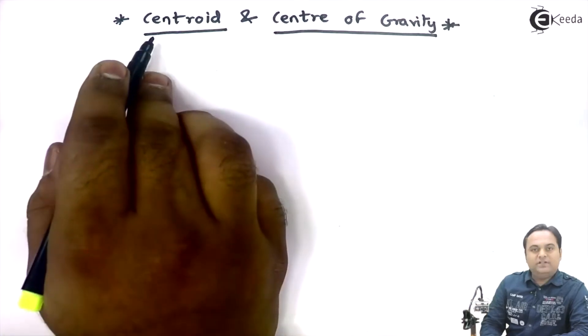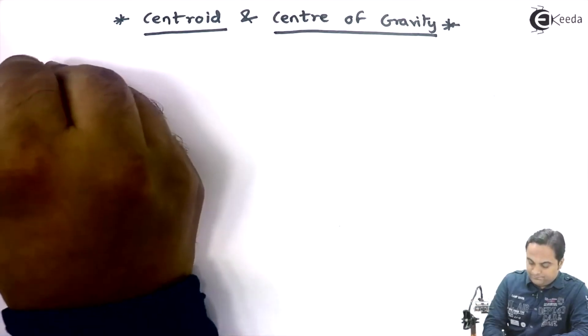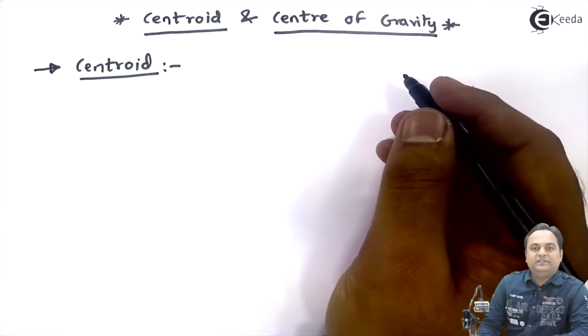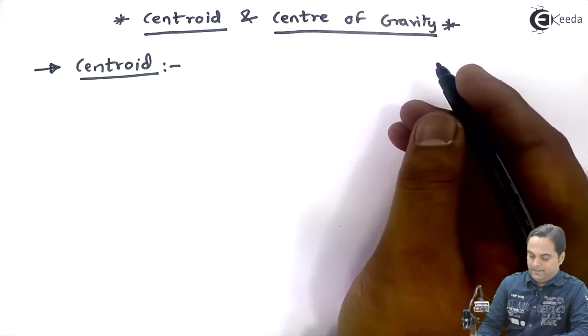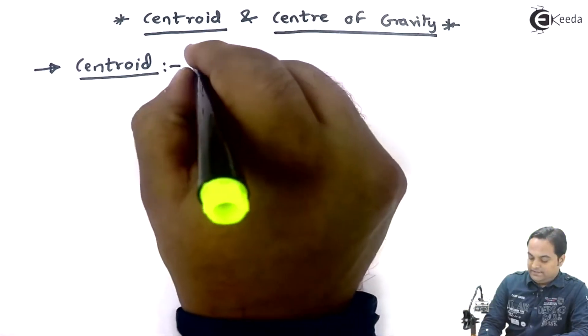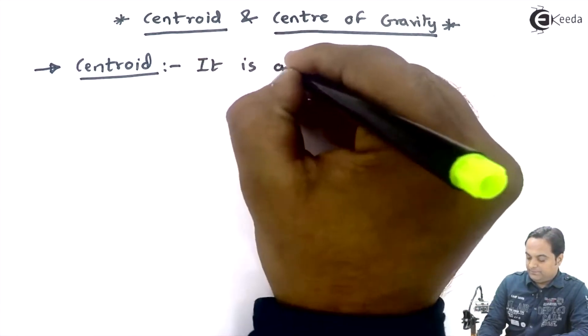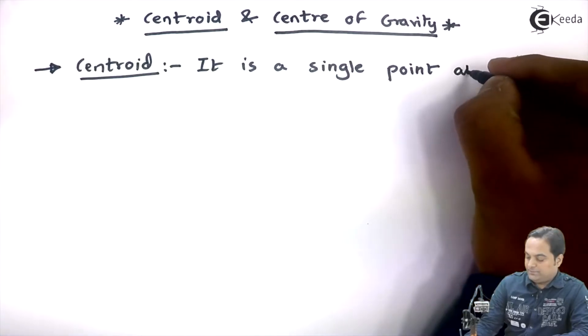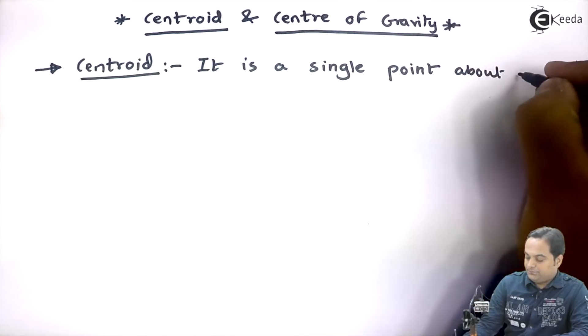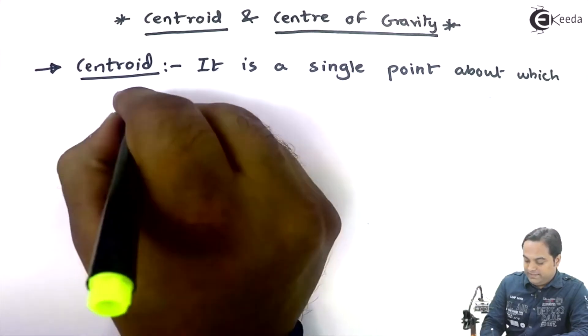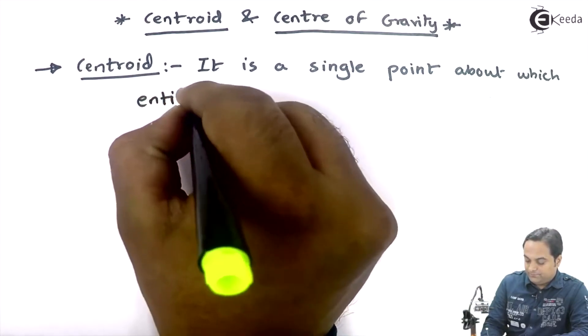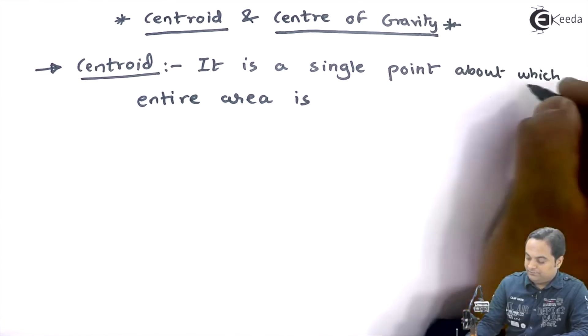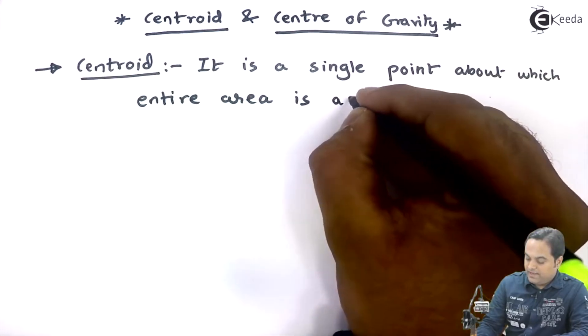First, let us understand what is centroid. Here I will be writing the definition of centroid. Centroid: it is a single point about which entire area is acting.